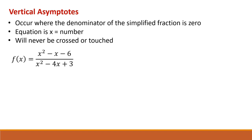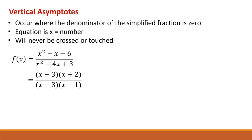Vertical asymptotes will never be crossed or touched. So let's look at this function: f of x equals x squared minus x minus 6 over x squared minus 4x plus 3. The first thing we'll do is factor the numerator and denominator to simplify the fraction. We do see a common factor of x minus 3 in the numerator and denominator, so we can simplify this fraction to x plus 2 over x minus 1.